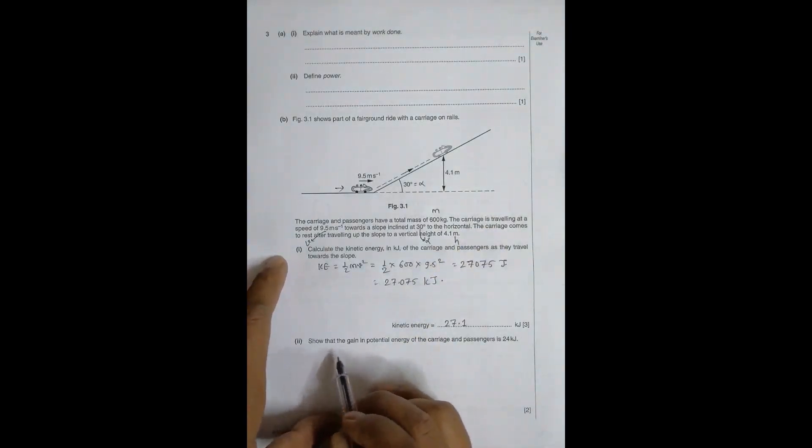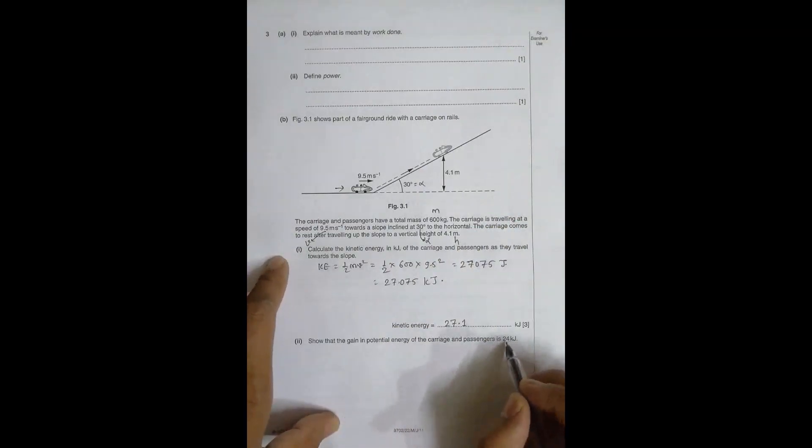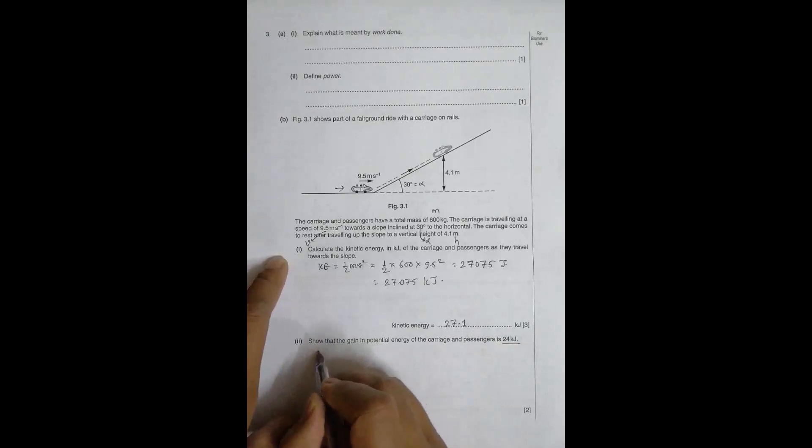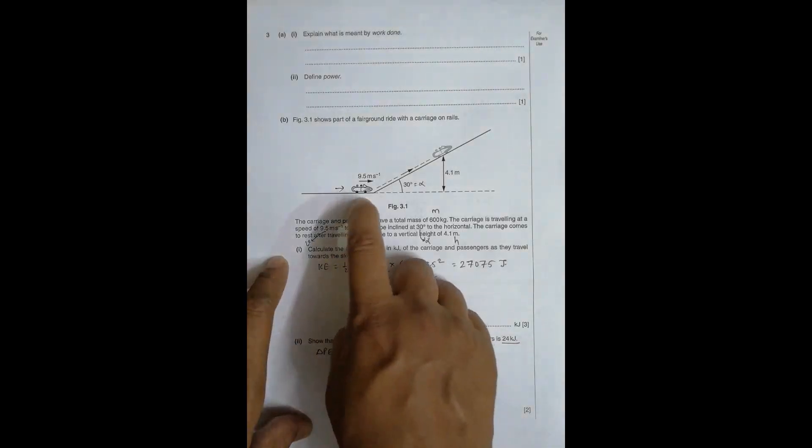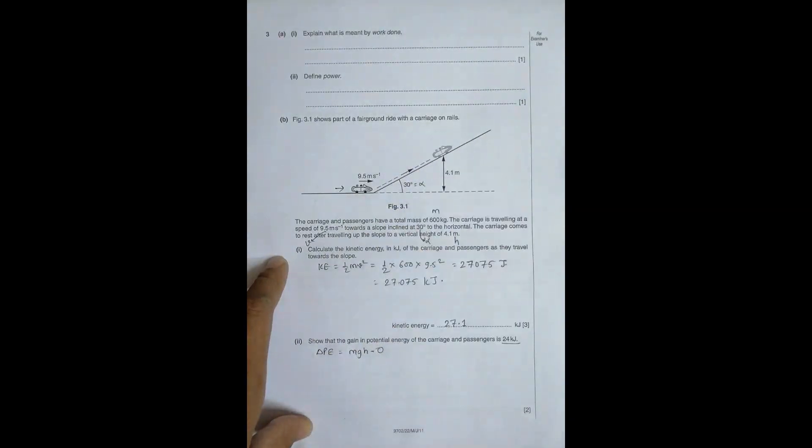The next question asks to show that the gain in potential energy of the carriage and passengers is 24 kilojoules. So the gain ΔPE = mgh. This is equal to mg × (H - 0), because the initial height is 0 and the final height is 4.1 meters.